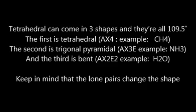Tetrahedral can come in three shapes and they're all 109.5 degrees. The first is tetrahedral, the second is trigonal pyramidal, and the third is bent. Keep in mind that lone pairs change the shape.